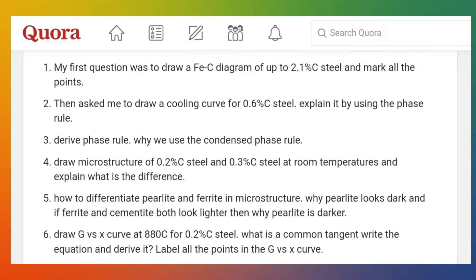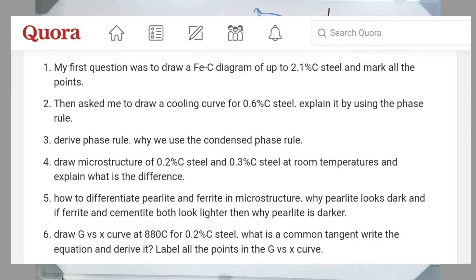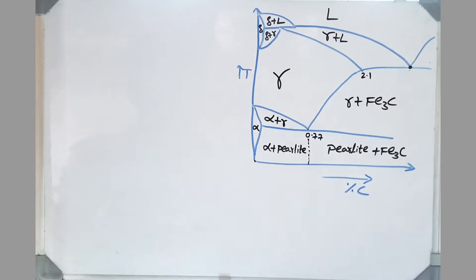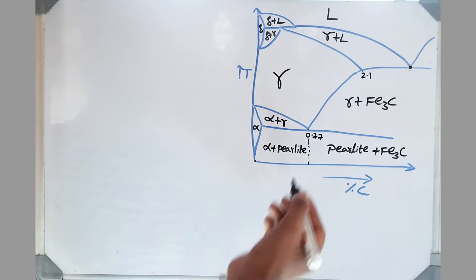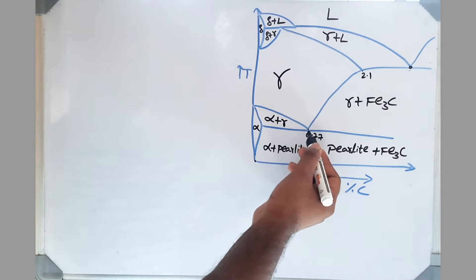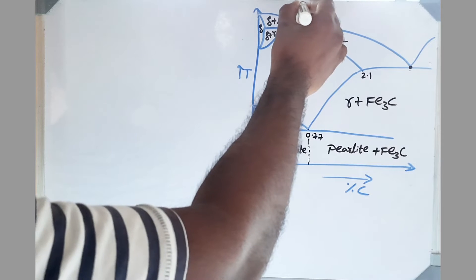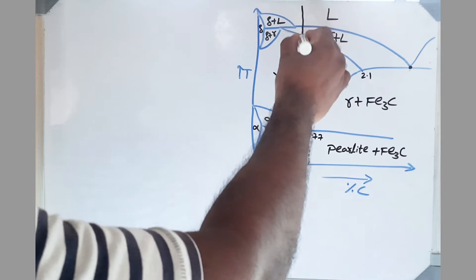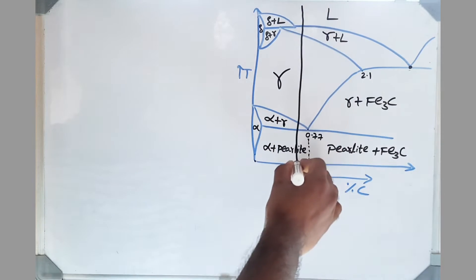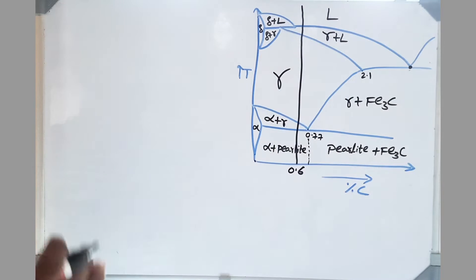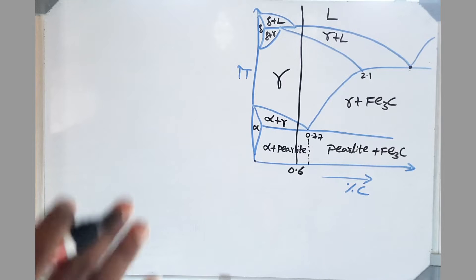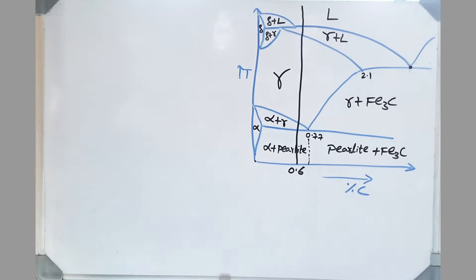The first question is: draw the iron-carbon diagram up to 2.1% carbon. Now we have the iron-carbon diagram. The next part requires us to consider 0.68% carbon — this lies between 0.77% and 0.54% on the diagram, so we take an alloy between these two values. This is our 0.68% carbon composition. Now we need to draw a cooling curve for this particular level.